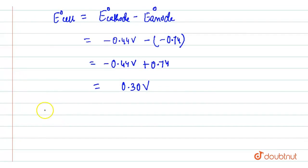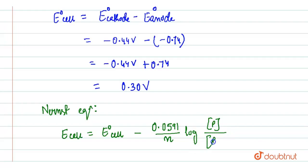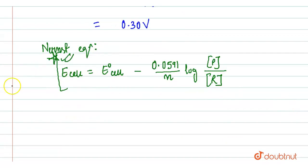Now, just apply the Nernst equation. According to Nernst equation, E cell, which is the cell potential, is equal to E0 cell minus 0.0591 upon N log of concentration of product divided by concentration of reactant. You have to keep this equation in your mind.